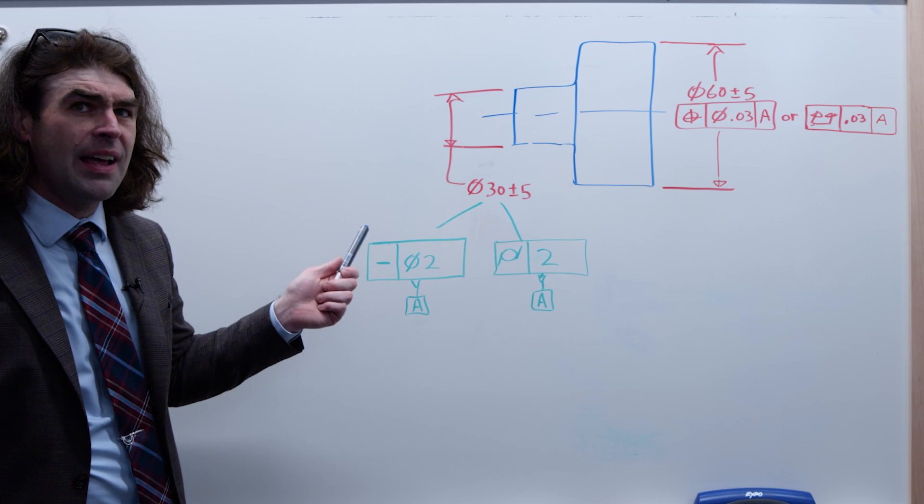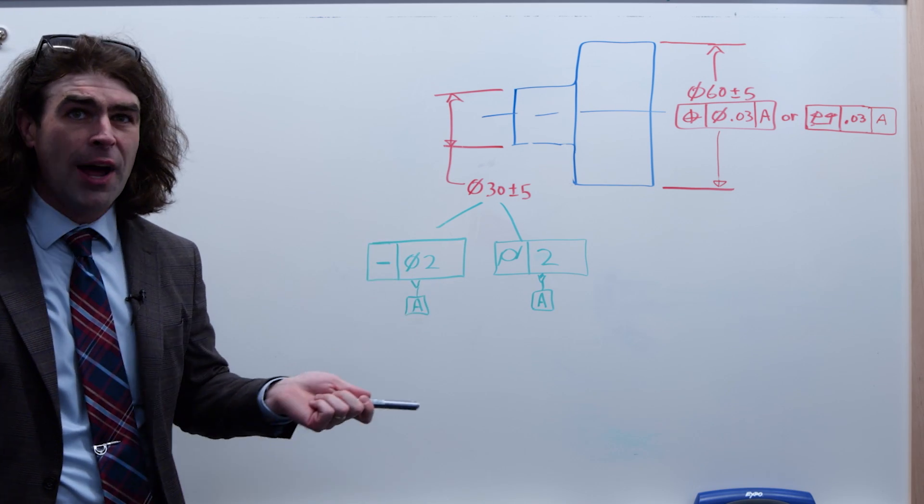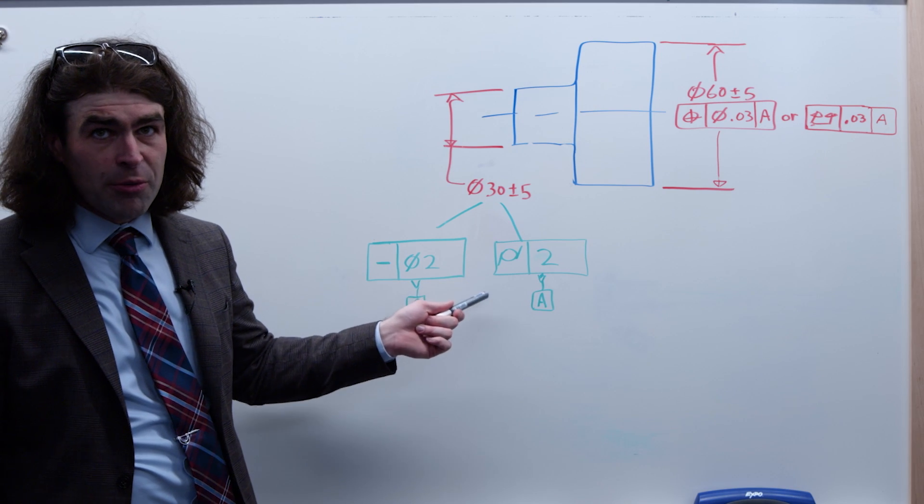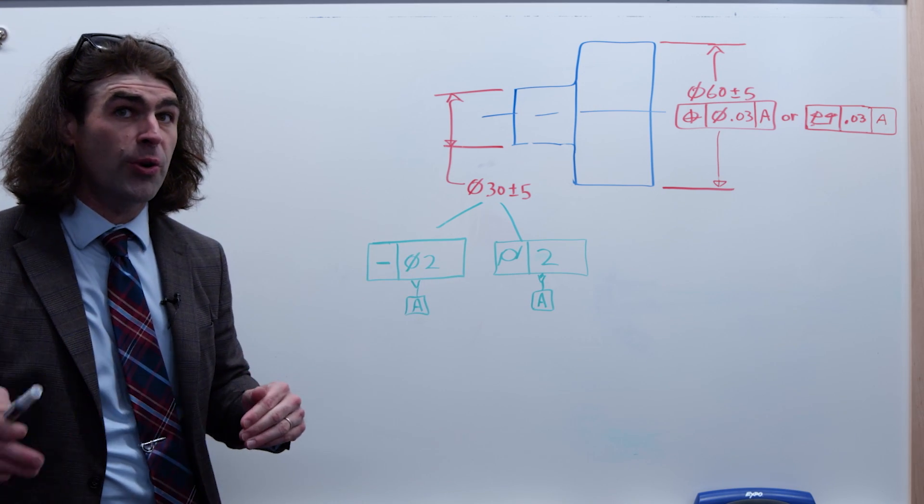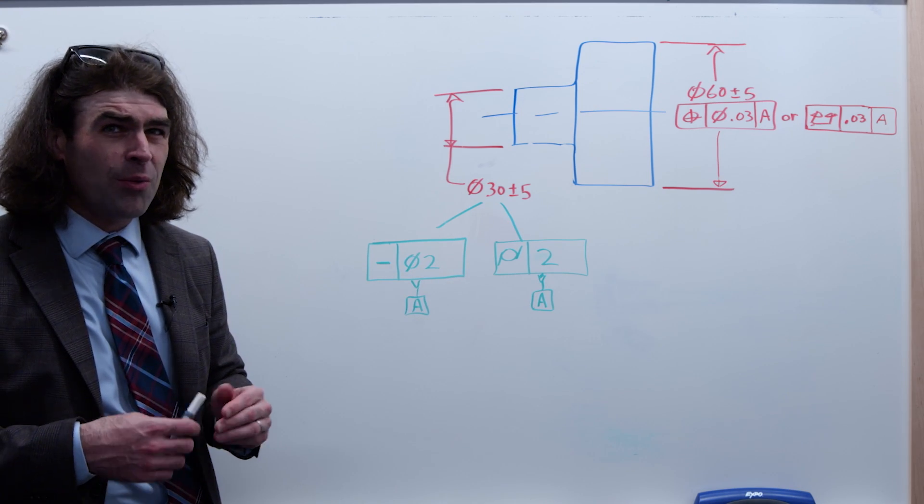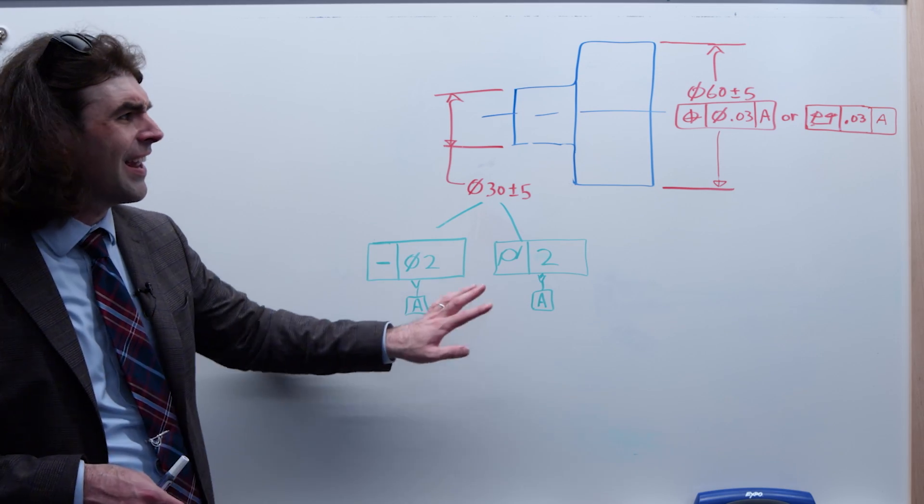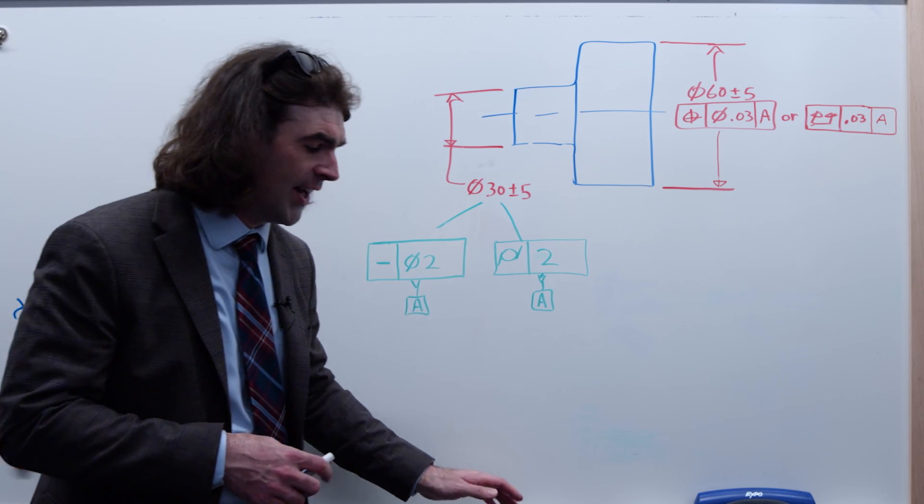It would be the same if this had more cylinders and we had like a run out here. The run out is somewhat similar to cylindricity in that you're controlling the surface. The run out is also going to control the coaxiality to something else. So I didn't include it here, I don't want to get into all of that.